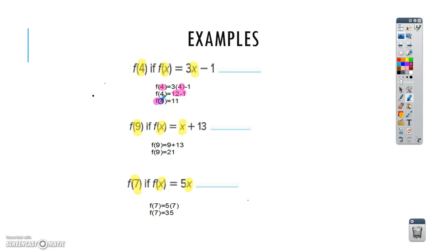For the second one, you would plug in 9 for X on each one, and so f(9) equals 9 plus 13, so 9 plus 13 is 21.